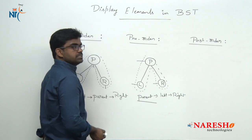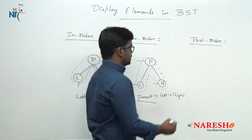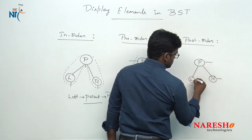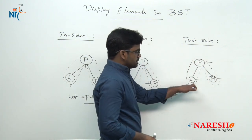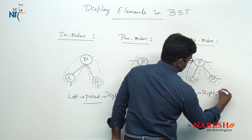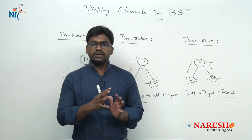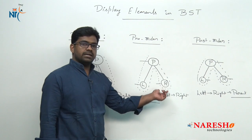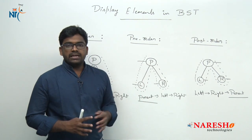In post-order traversal, we again have parent, left child, and right child. But here, the left child is connected first, then the right child, and finally the parent. So to summarize: in pre-order, the parent comes before left and right; in in-order, the parent comes between left and right; and in post-order, the parent comes after left and right. These are the three ways to display elements of a binary search tree.